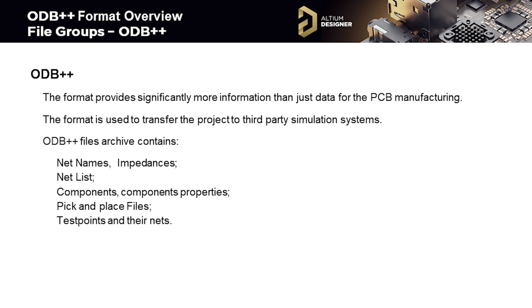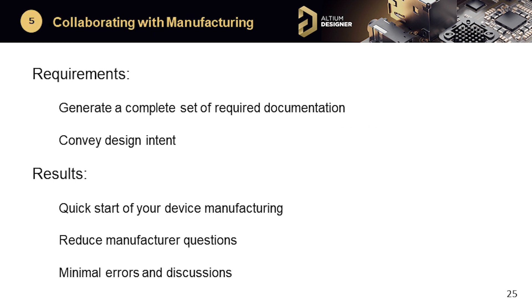ODB++ can be useful to transfer all of the critical design information to a simulation environment, making ODB files more practical for manufacturing than Gerbers. You get all the information you'd get from Gerber files, plus additional information like net names and impedances. We have now seen all of the critical outputs and how to generate a complete set of documentation. The key goal is to convey your design intent, which will provide a quick start to device manufacturing by reducing questions, errors, and discussions.